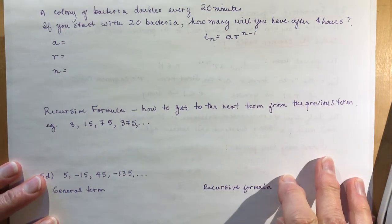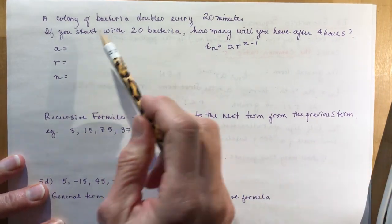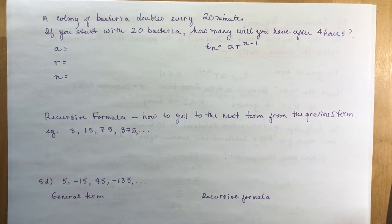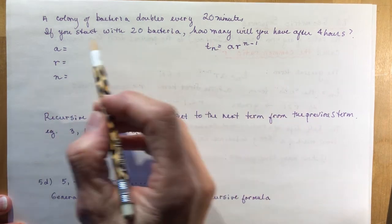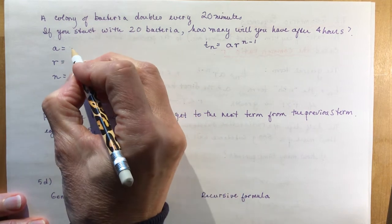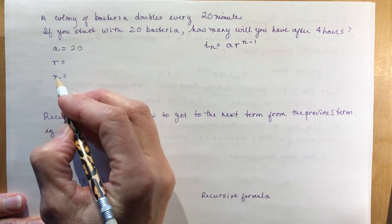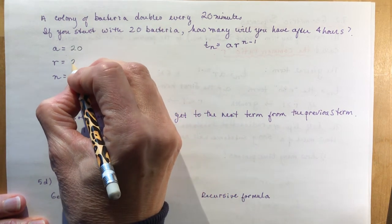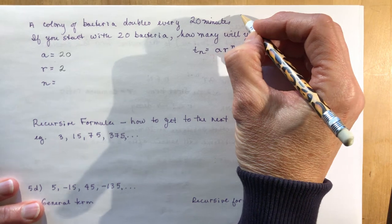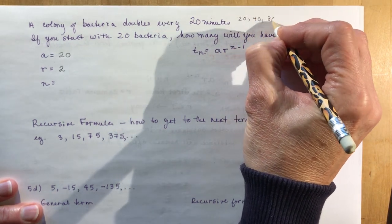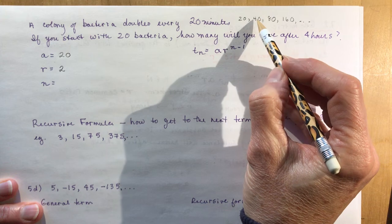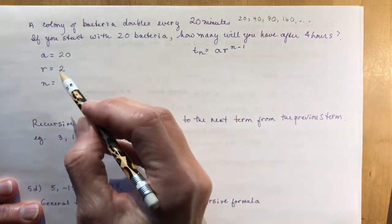Next question: a colony of bacteria doubles every 20 minutes. If you start with 20 bacteria, how many will you have after 4 hours? Identify a, r, and n. You started with 20, so a equals 20. It doubles every 20 minutes, so r equals 2, and the sequence goes: 20, 40, 80, 160...